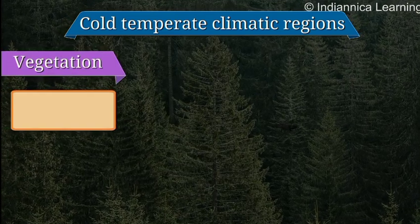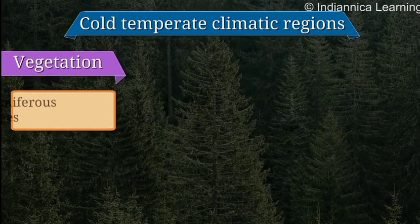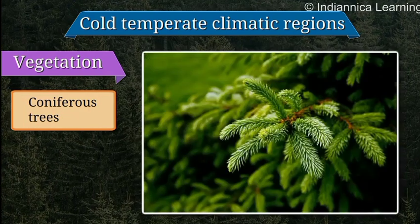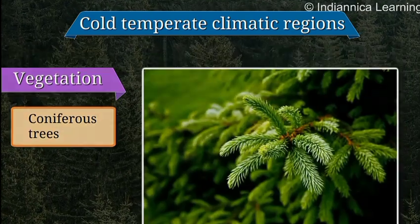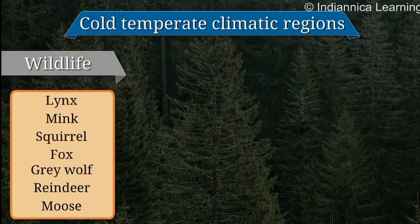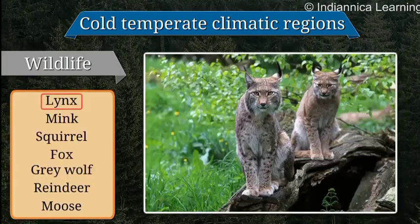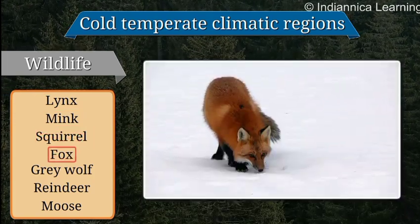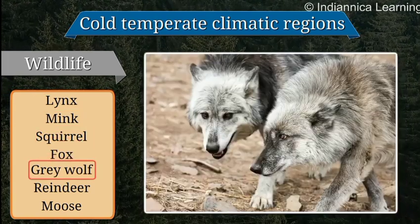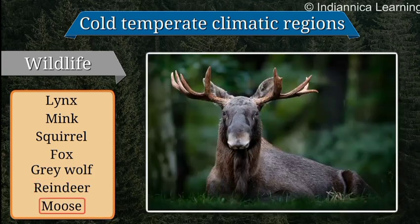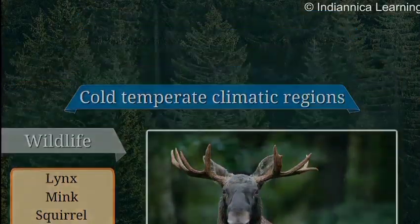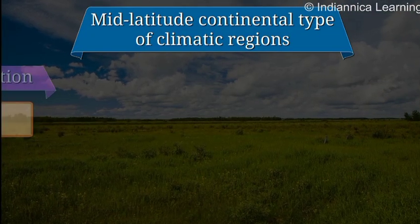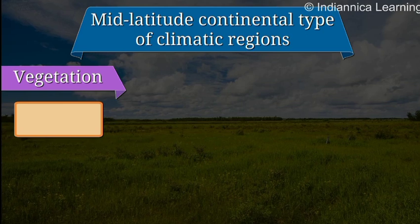Cold temperate climate: The regions with the cold temperate type of climate have a broad belt of coniferous trees which bear needle-shaped leaves. The wildlife here consists of the lynx, mink, squirrel, fox, gray wolf, reindeer, and moose.